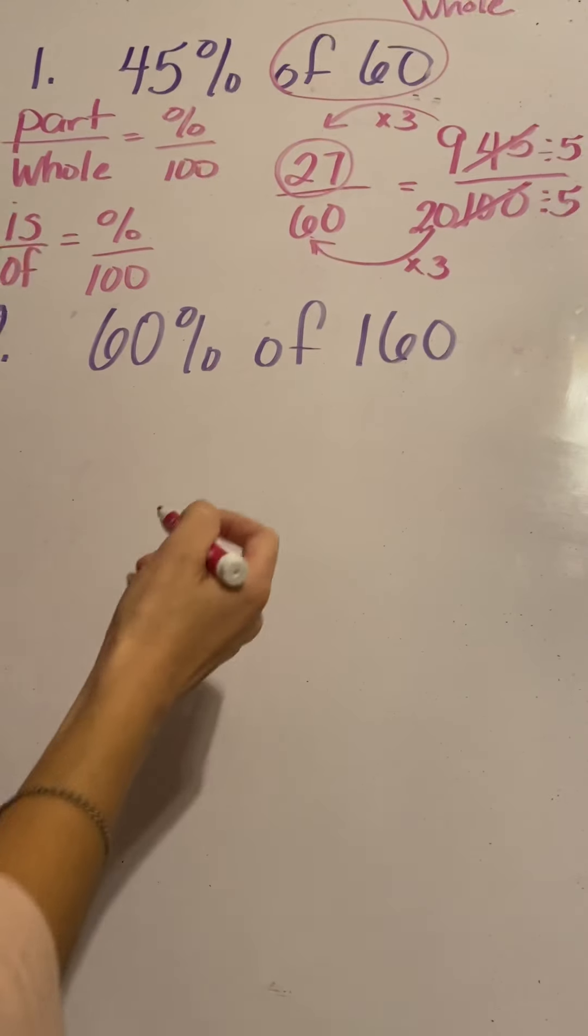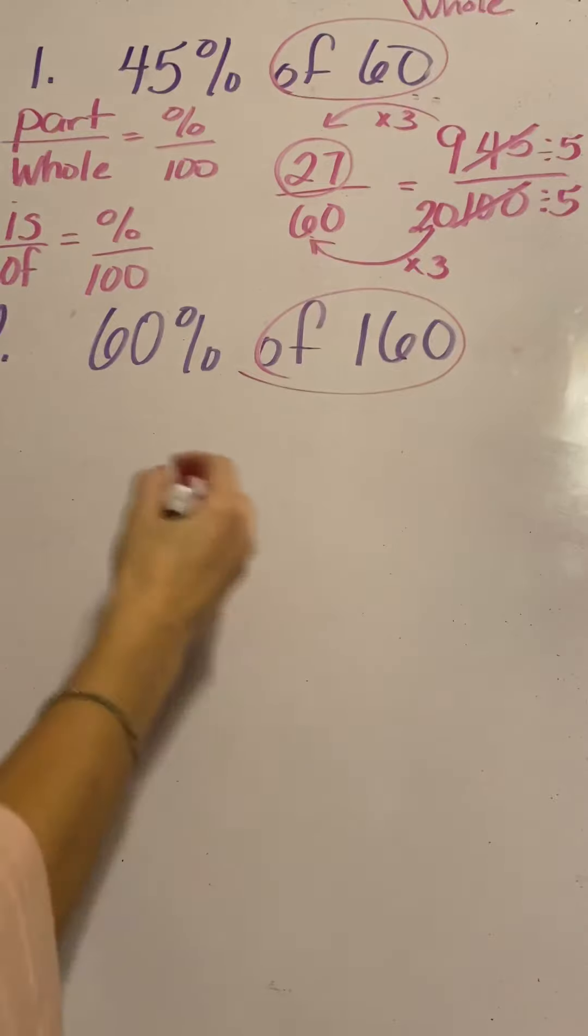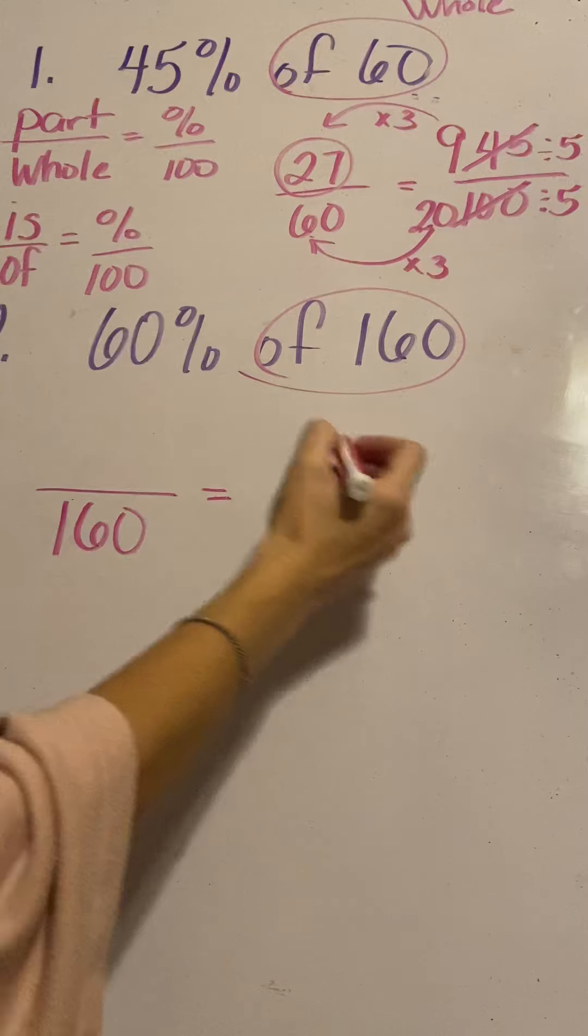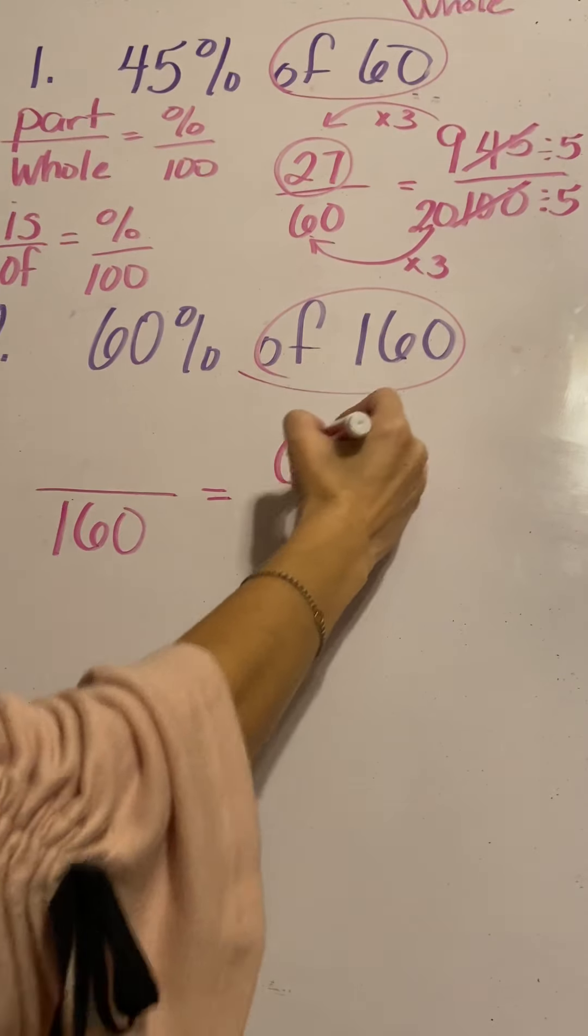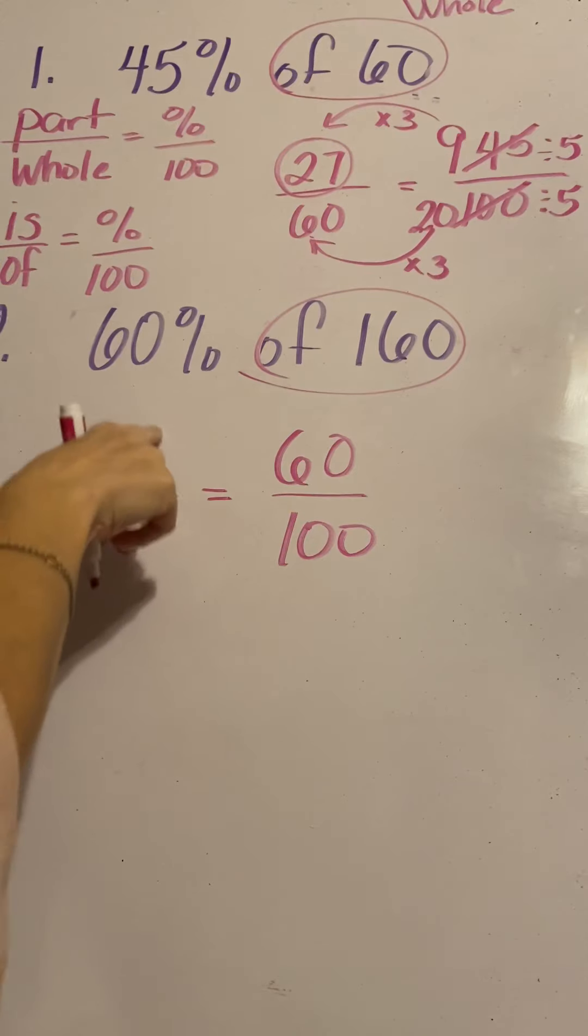All right, the second question. So the of number, that's your whole group. So that's going to be out of 160. And then 60%, 60% out of 100. So we're setting it up as a proportion. We're just trying to solve what that number is right there.